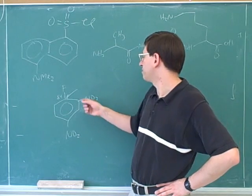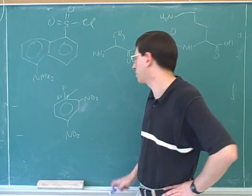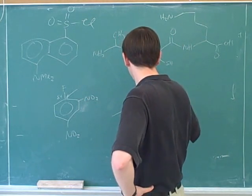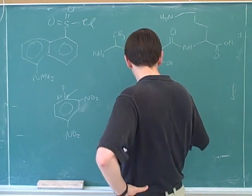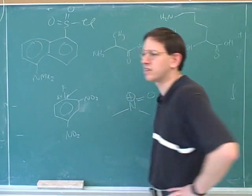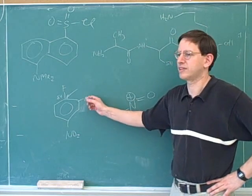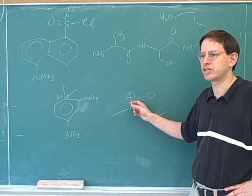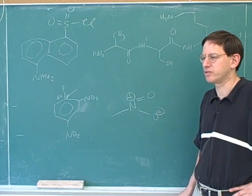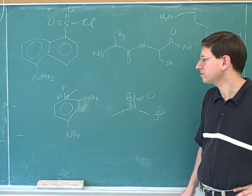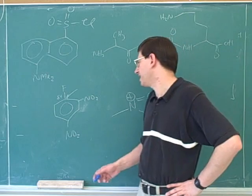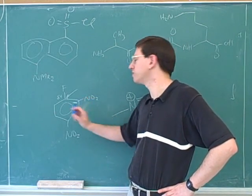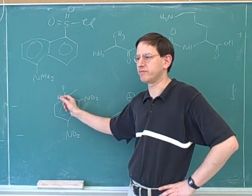It's important to know that nitro groups are electron-withdrawing. We learned that when we were learning about benzene substituents back at the beginning of the course. This is the Lewis structure for nitro. Even though it's not obvious from looking at the condensed notation, a nitro-nitrogen has a positive formal charge, which makes it definitely very electron-withdrawing.